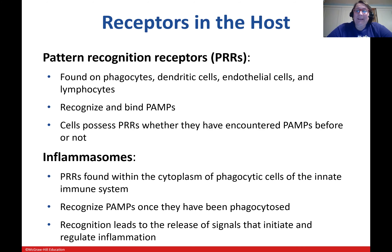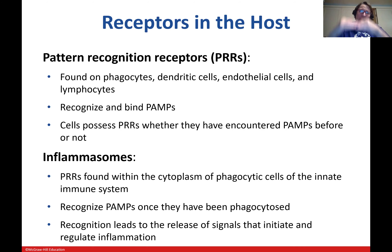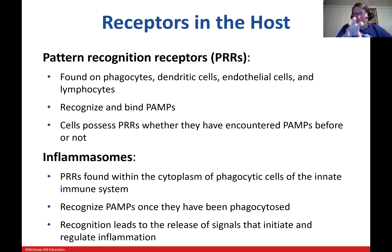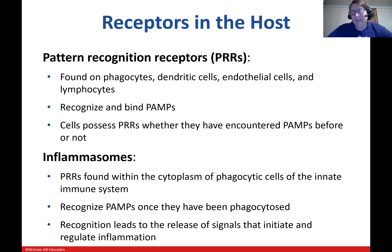There is also something called an inflammasome — found within the cytoplasm of phagocytic cells. Once bacteria have been brought in and the phagolysosome forms, additional receptors inside the macrophage also surveil whatever's been engulfed. If it recognizes those molecular patterns, it will digest and display them on the surface to do the handshake. Recognition leads to the release of signals that start an inflammatory process and initiate the handshake with the adaptive immune system.